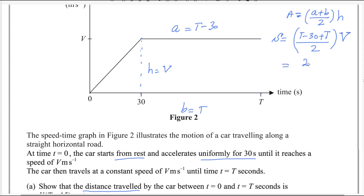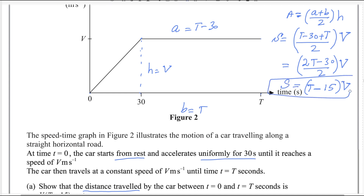This gives 2t minus 30, divided by 2, multiplied by v. The 2 divides both values: 2t divided by 2 gives t, and 30 divided by 2 gives 15. So the distance equals v(t minus 15), as required. First part of question number 5 is done.